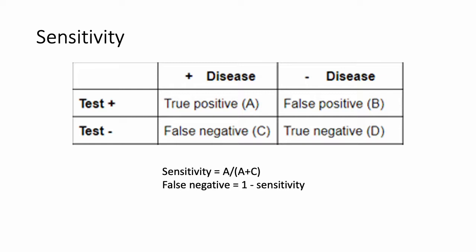Another way to think about this is that the false negative rate is going to be 1 minus the sensitivity.